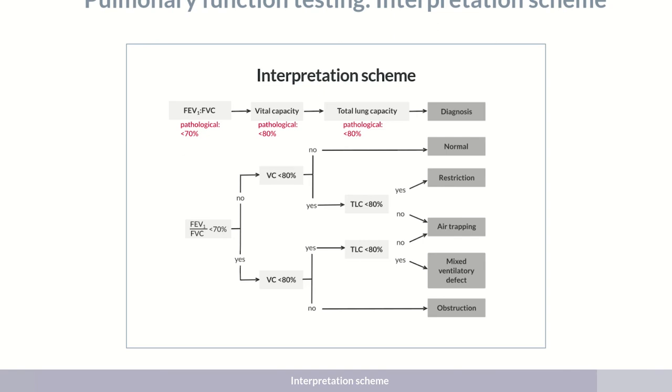So, as you can see, to diagnose restriction, mixed ventilatory defects, and hyperinflation, the total lung capacity is required. Therefore, if a decreased vital capacity is measured in spirometry, body plethysmography should follow to determine the total lung capacity.